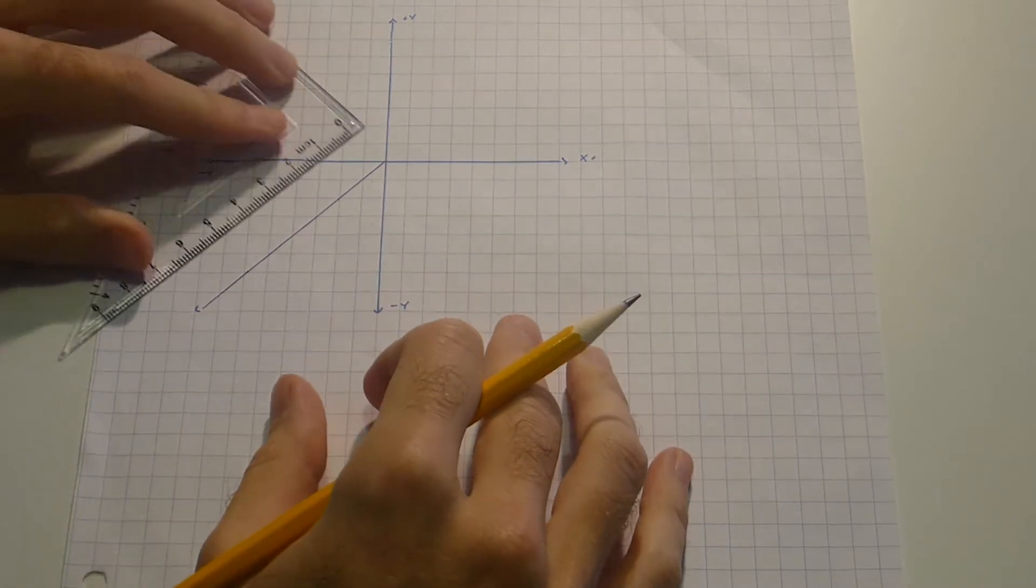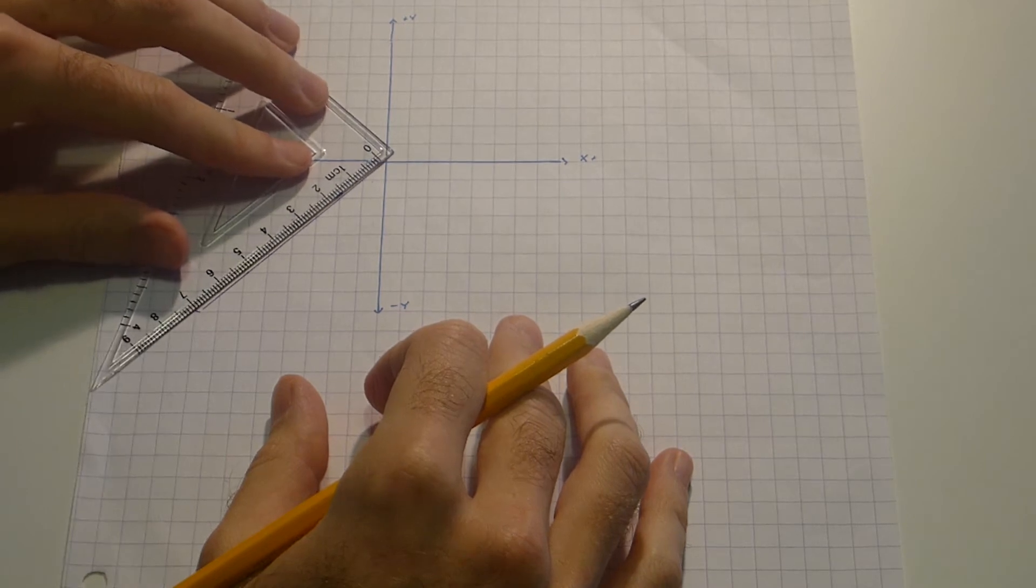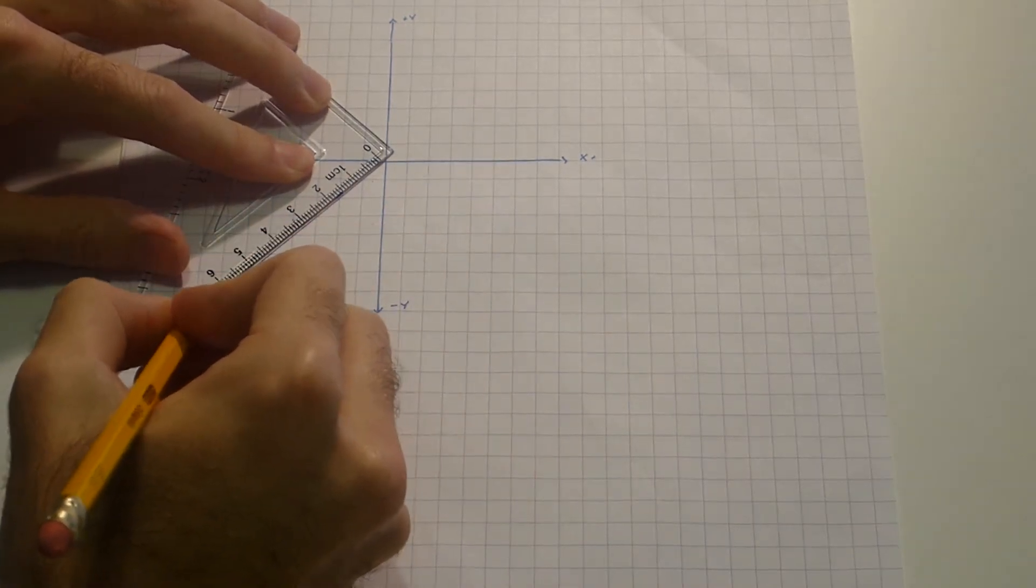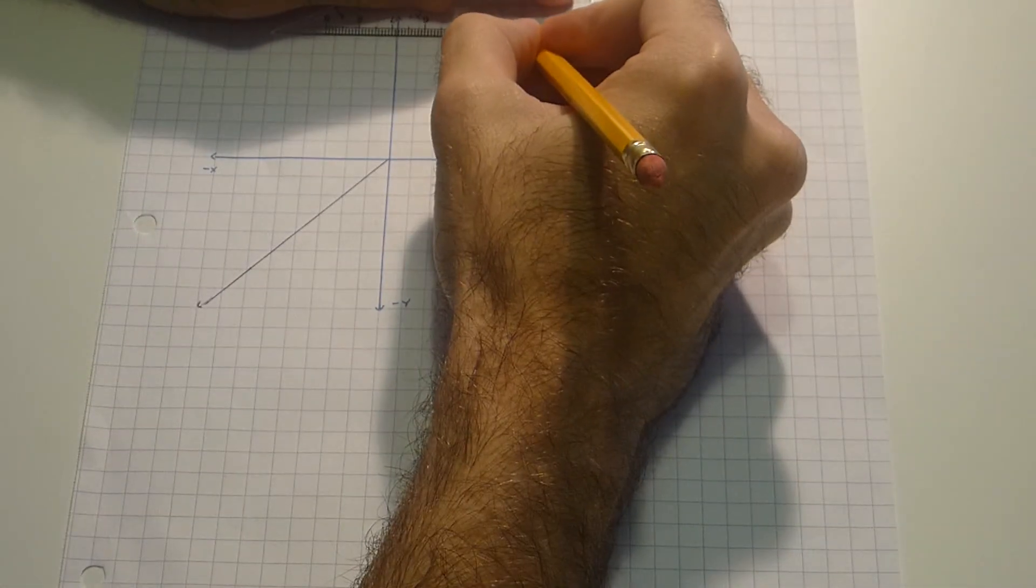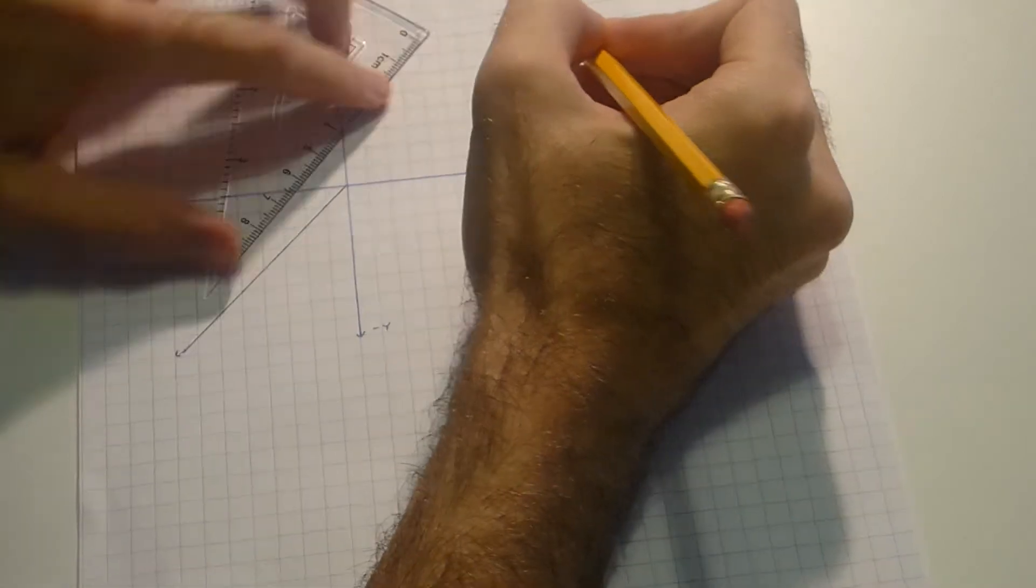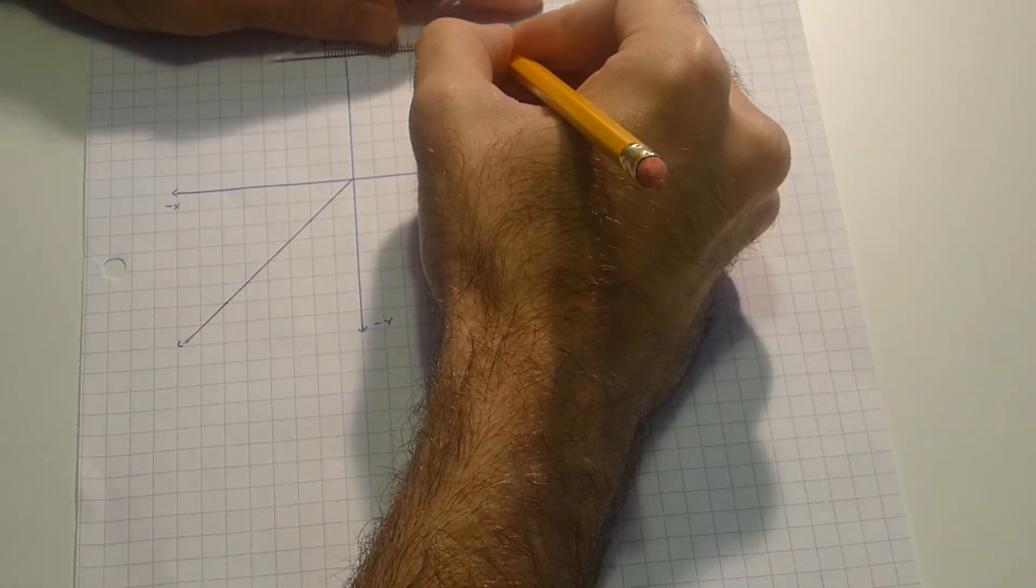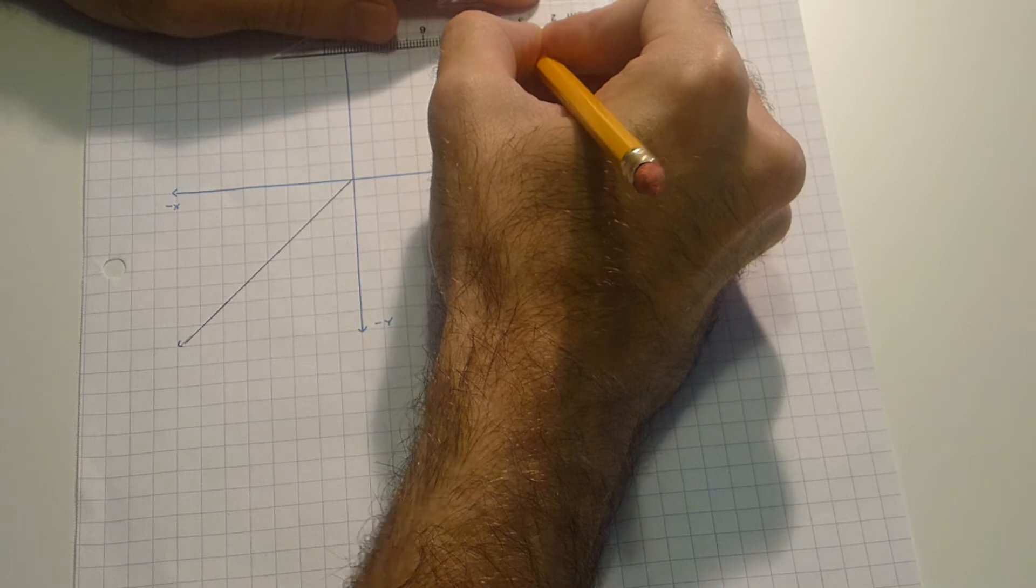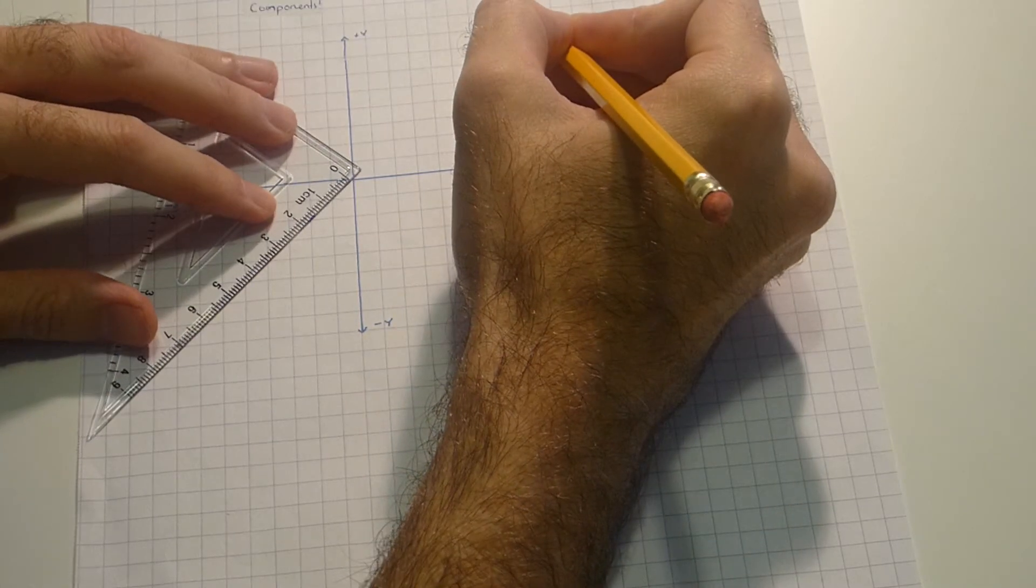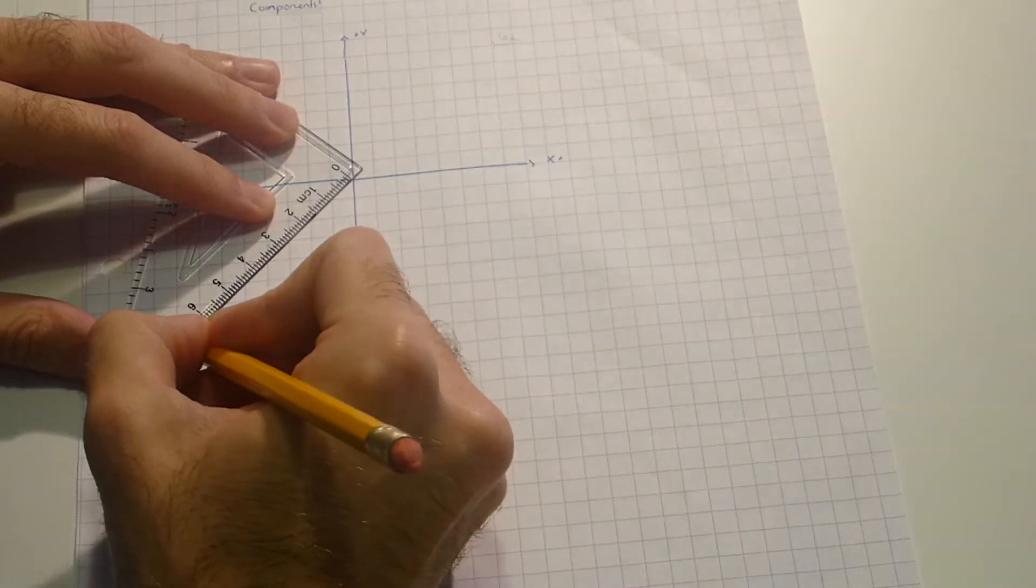So first of all they say the vector has magnitude of 7 centimeters. So you actually see that my scale here is one to one. I could add here something like one centimeter is one centimeter and we really have 7 centimeters down here.